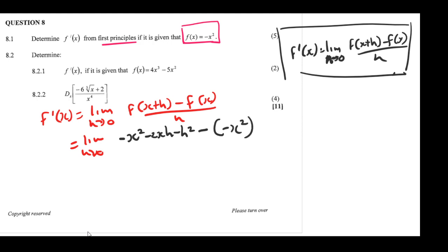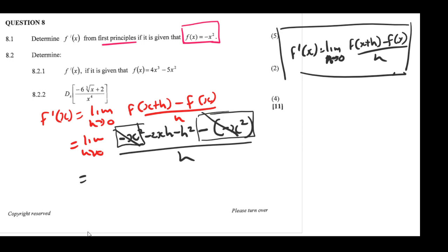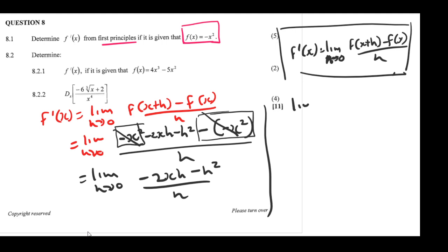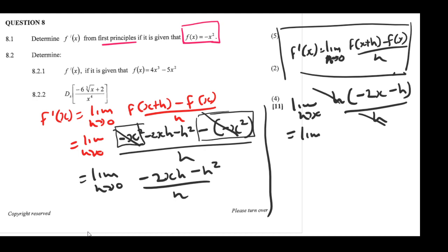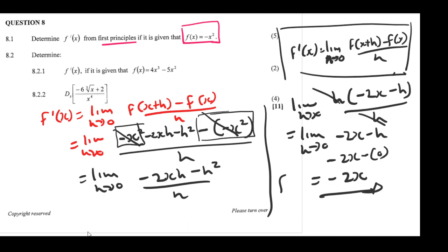The -x² and +x² cancel out, leaving the limit as h approaches 0 of (-2xh - h²) over h. Factorizing h gives h(-2x - h) over h, the h's divide out, leaving the limit as h approaches 0 of -2x - h. Substituting h = 0 gives the answer: -2x. This is the first derivative using first principles.